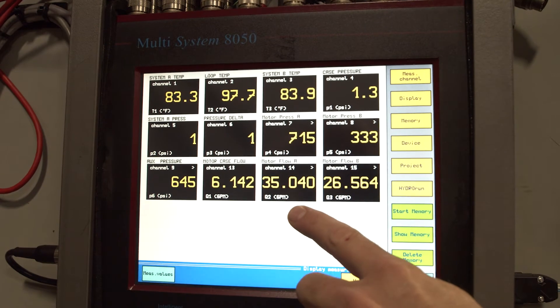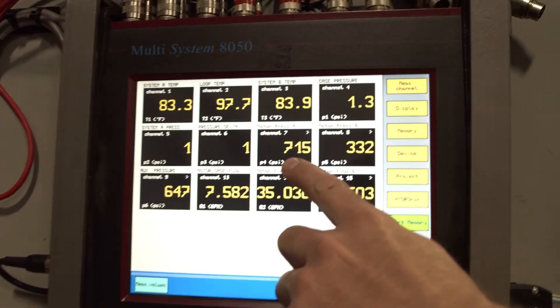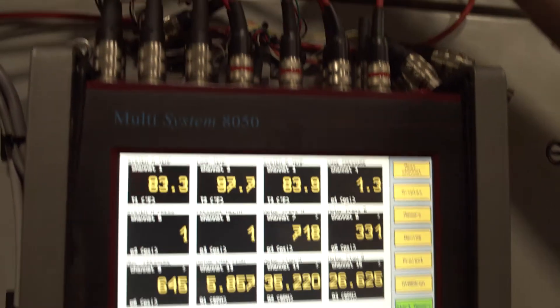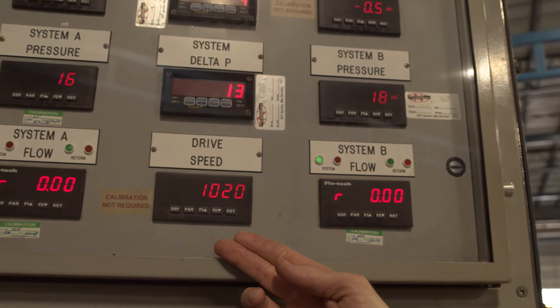Now we are going to review the results of step one, our baseline reading. We have set the flow to 35 gallons per minute. The load on the motor is minimal and requires 700 psi, and our resulting RPM is 1020.